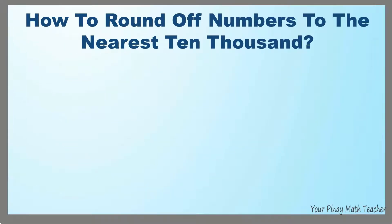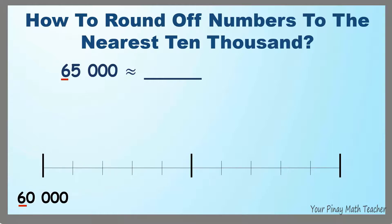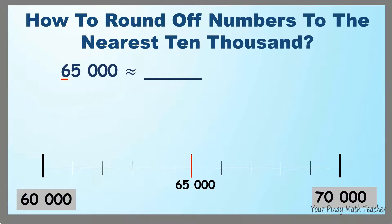How to round off numbers to the nearest 10,000? For example, 65,000. This number has the digit 6 in the 10,000's place and is in between 60,000 and 70,000. Which is nearer to 65,000 — 60,000 or 70,000? They have the same distances, but once the number reaches the middle, it has to be rounded off to the greater number. So, 65,000 is rounded off to 70,000.